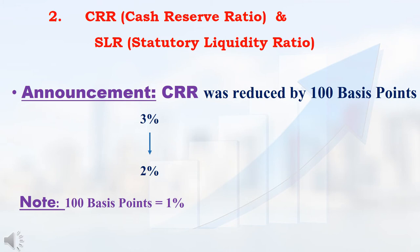Whenever RBI increases or decreases CRR and SLR, the announcement will come like this: 'CRR was reduced by 100 basis points.' 100 basis points is nothing but 1%. Suppose earlier CRR was 3%, then after the announcement CRR will reduce to 2%. Suppose RBI reduces CRR by 25 basis points, then CRR will reduce by 0.25%.